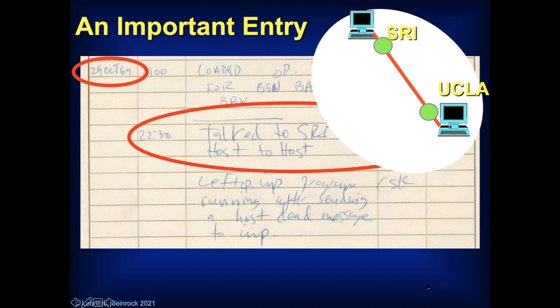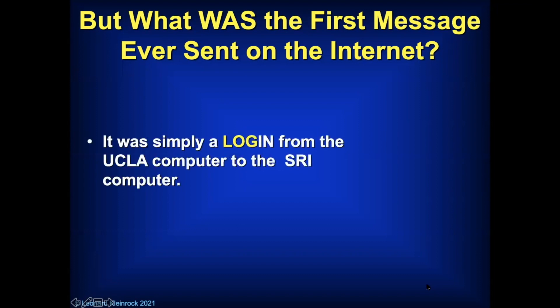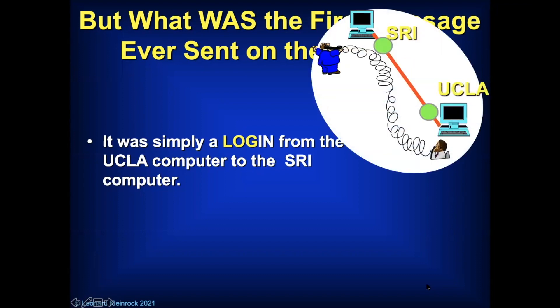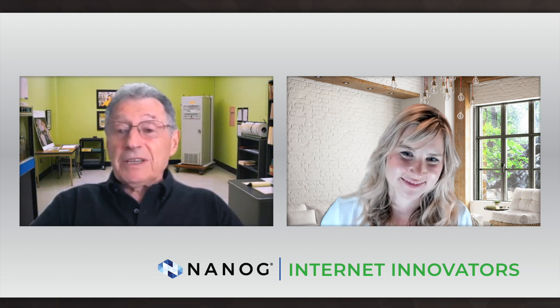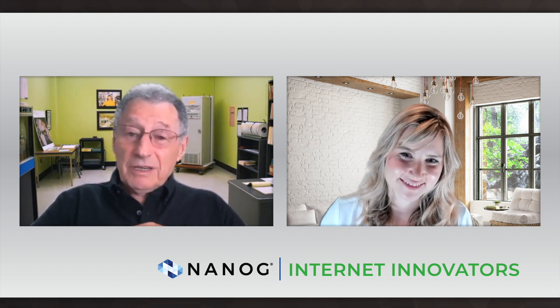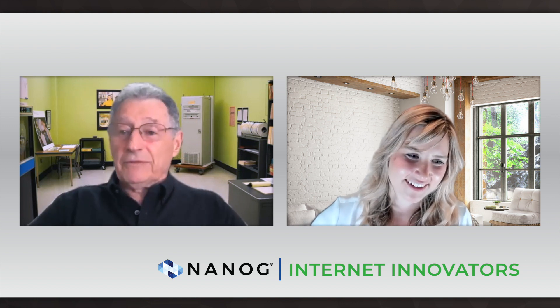The setup was: a machine at UCLA, through the green switch — that IMP I showed you — through a high-speed line to the SRI switch to the SRI computer. We want to log in from one computer to another. So what was that first message ever? Well, was it really something great, like 'one giant leap for mankind'? Was it 'come here, Watson, I need you'? Or 'what hath God wrought' like the telegraph? Nope. All we wanted to do was log in — to log in, you have to type L-O-G, and the remote machine is smart enough to type the 'IN' itself. Just to be sure, we had Charlie Klein at my end and Bill Duvall up at the SRI end connected by telephone. Understand the irony here, Elizabeth — we're using the telephone network to prove a new technology which is going to eat the lunch of the telephone network. And eventually it did.